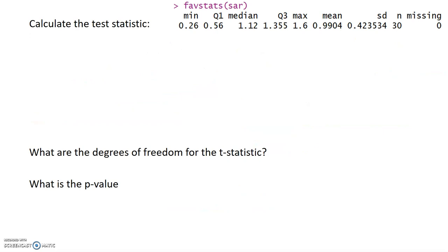To calculate the test statistic, I first remember what the T statistic looks like. A T statistic has the form: sample mean minus the null hypothesized value divided by sample standard deviation over the square root of the sample size. Using the fav stats in the upper right hand corner, I have 0.9904 minus 1.6, divided by 0.4234 over the square root of 30. We have a really negative T statistic, negative 7.89.